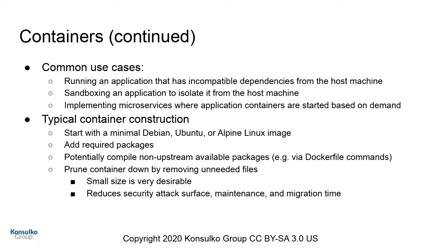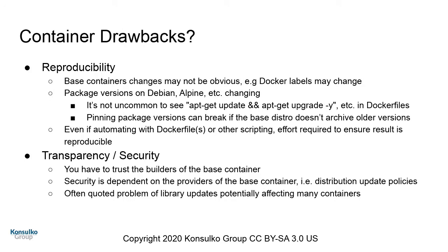For both use cases, sandboxing is what we think of, and microservices as Bruce mentioned. The typical way is you would prune down a distro — Alpine, as Bruce mentioned, is a very common thing you'll see people using in containers. A quick drawback is reproducibility, which is where OE gives us an advantage. With Docker Hub, if someone says 'just go install this image,' you have no idea what's in it unless you do forensic analysis. There's a lot of trust there, which if you're paranoid can be difficult.